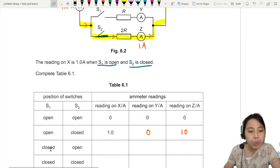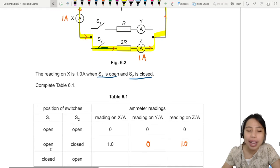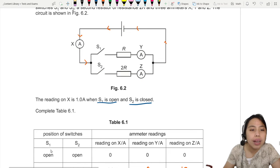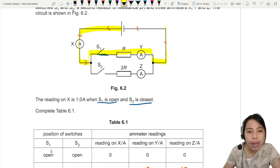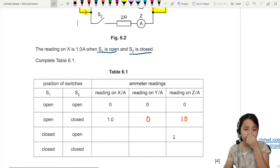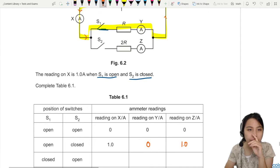Part 2. S1 is closed. S2 is open. Time to change the diagram. S1 closed. S2 is open. So S1 is closed, means now current will flow through S1 and then go back. It's all blank. The one I definitely know is there's no current going through the Z ammeter now. So Z is going to be 0. So I'm going to put that because I'm very sure of that. 0.